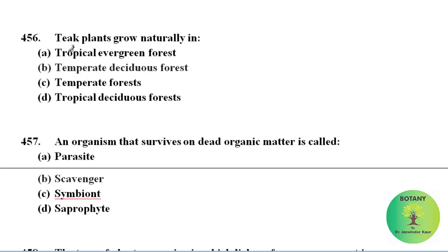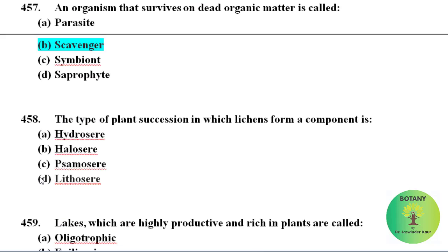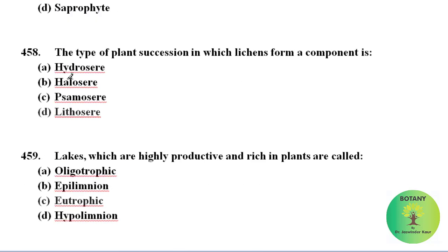Teak plants grow naturally in temperate deciduous forests. An organism that survives on dead organic matter is called a scavenger. The type of plant succession in which lichens form a component is the lithosere, where succession starts from rocks.